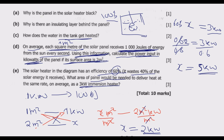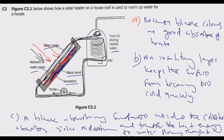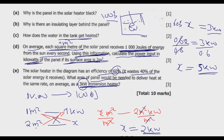So x equals 5 kilowatts. An immersion heater would only require 3 kilowatts, but since this solar heater is only 60% efficient, we need 5 kilowatts as input to generate 3 kilowatts of output — because 40% of 5 kilowatts, which is 2 kilowatts, is wasted.